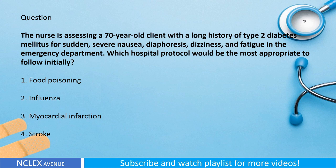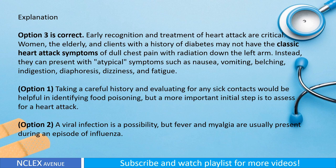Question: The nurse is assessing a 70-year-old client with a long history of type 2 diabetes mellitus for sudden severe nausea, diaphoresis, dizziness, and fatigue in the emergency department. Which hospital protocol would be most appropriate to follow initially? One: food poisoning. Two: influenza. Three: myocardial infarction. Four: stroke. Explanation: Option three is correct. Early recognition and treatment of heart attack are critical. Women, the elderly, and clients with a history of diabetes may not have the classic symptoms of dull chest pain radiating down the left arm; instead they can present with atypical symptoms such as nausea, dramatic belching, indigestion, diaphoresis, dizziness, and fatigue.